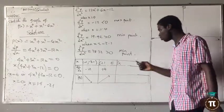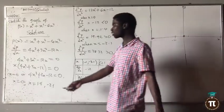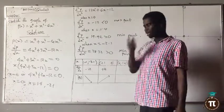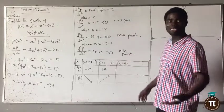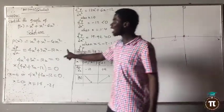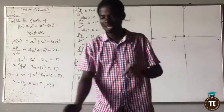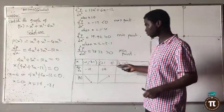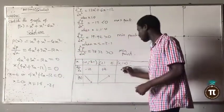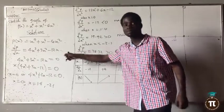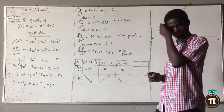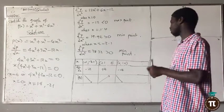From zero to the next stationary point, 1.4: pick any number between 0 and 1.4 — say 1 or 0.9. Put one into the derivative and the answer is minus five — that's negative. Between 0 and 1.4 the derivative is negative, which means the function is decreasing.